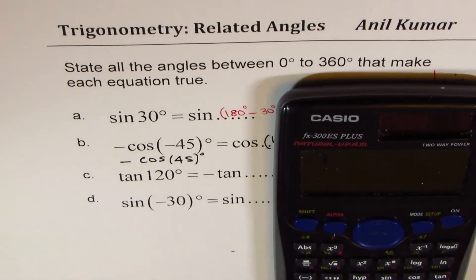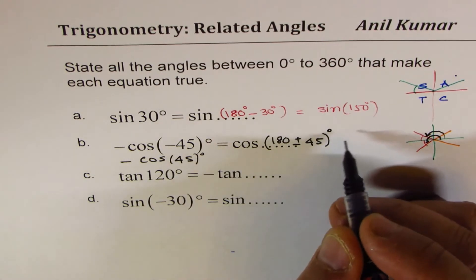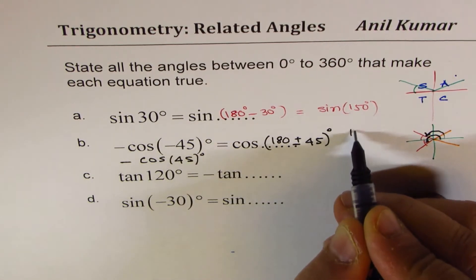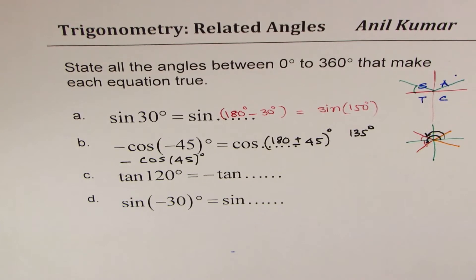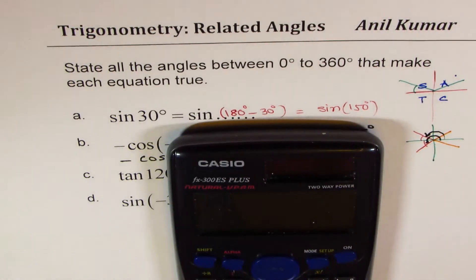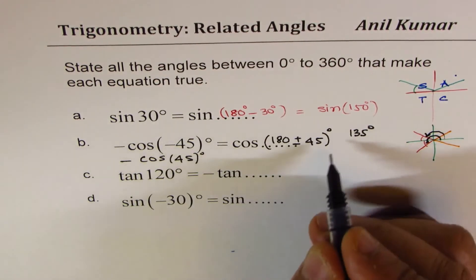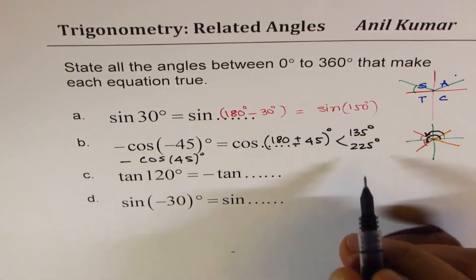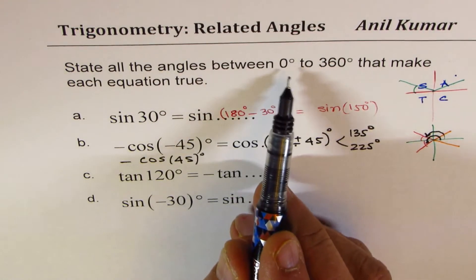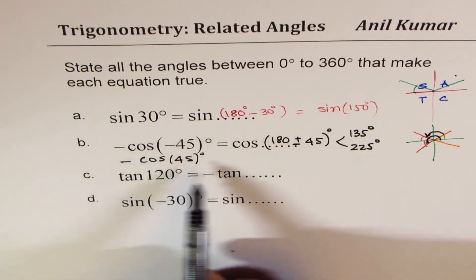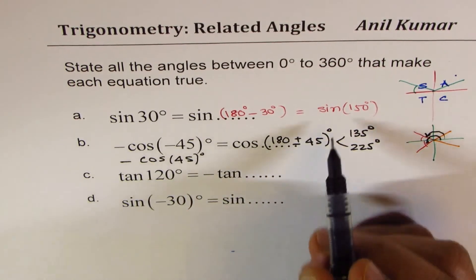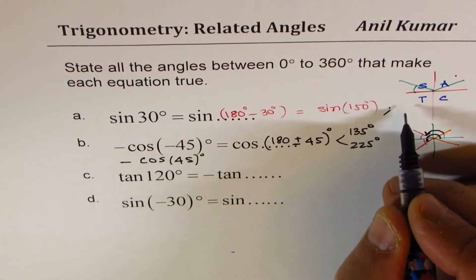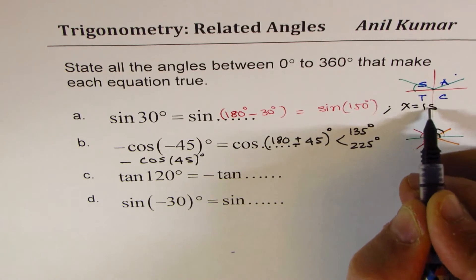So you can do 180 minus 45 equals 135. So one of the angles will be 135 degrees, and the other will be 180 plus 45, 225. So the other angle will be 225 degrees. So for the first case, the angle is x equals 150 degrees.